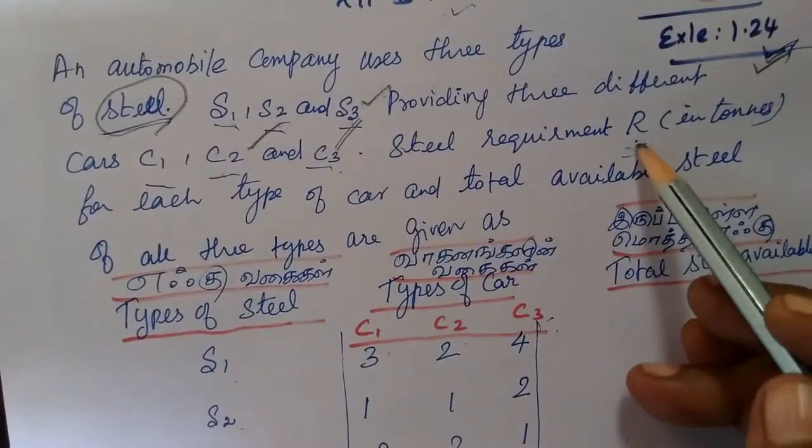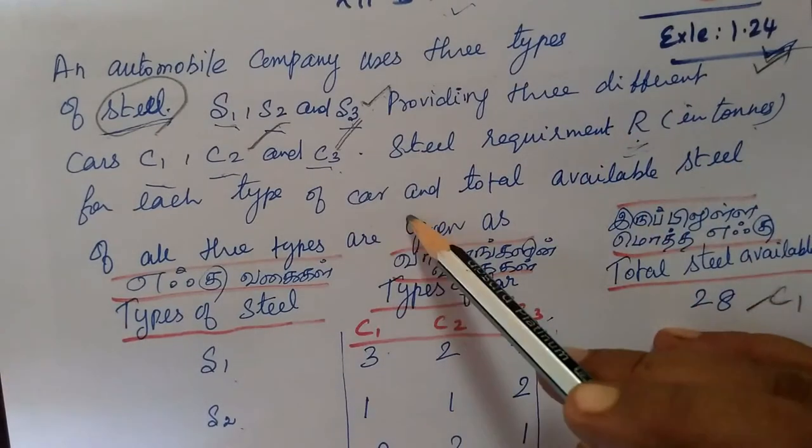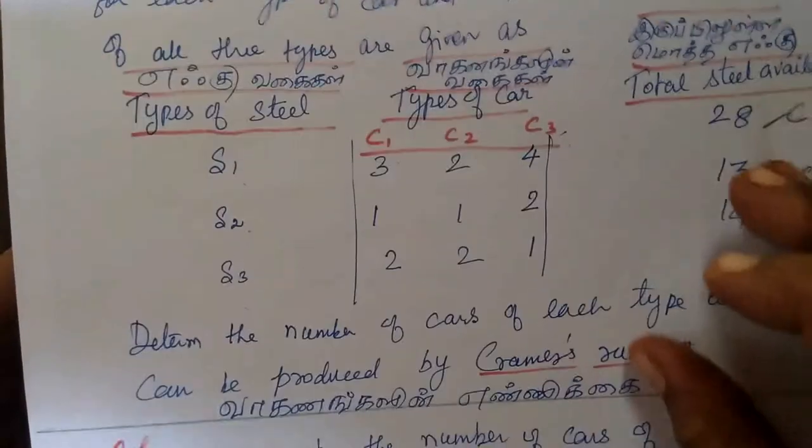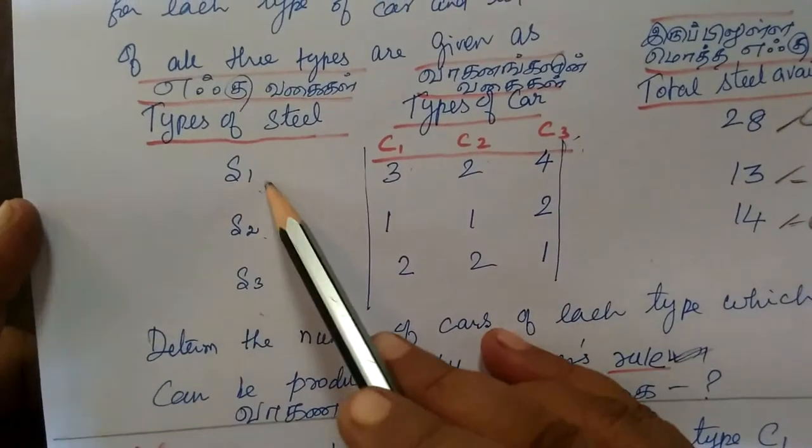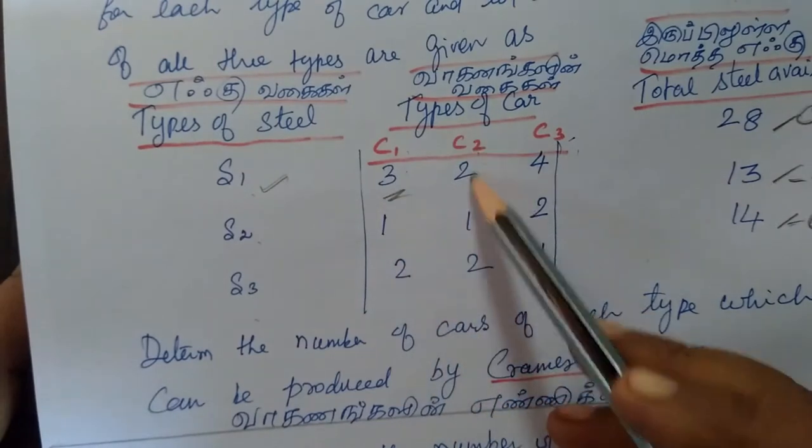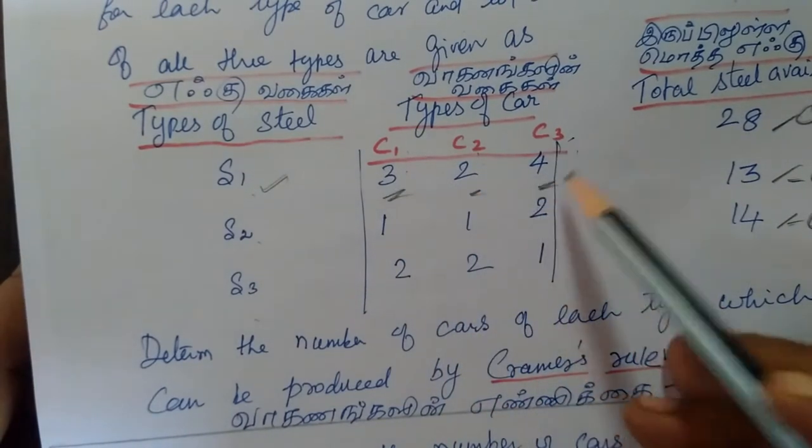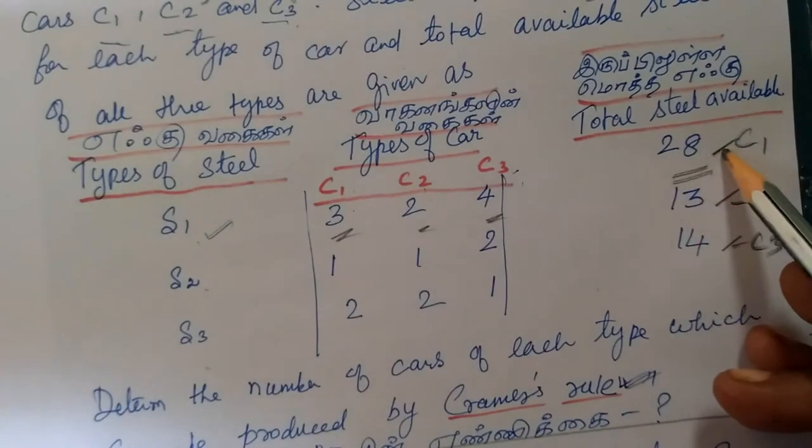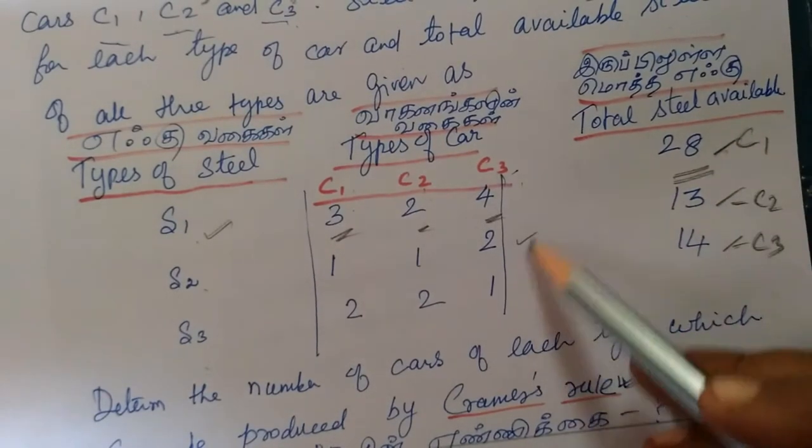Steel requirements are in tons for each type of car and the total available steel are given in the following table. So, S1 type for car C1 is 2, C2 is 3 and C3 is 4. The total is 28 tons. This is the table.